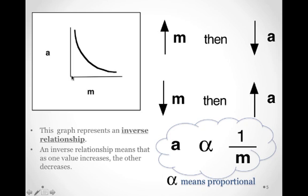Therefore, we get this relationship right here, which is an inverse variation. So the acceleration is inversely proportional to the mass.